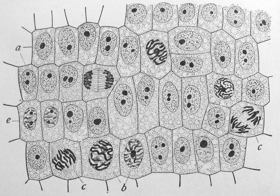Many types of prokaryotic and eukaryotic cells have a cell wall. The cell wall acts to protect the cell mechanically and chemically from its environment, and is an additional layer of protection to the cell membrane. Different types of cell have cell walls made up of different materials: plant cell walls are primarily made up of cellulose, fungi cell walls are made up of chitin, and bacteria cell walls are made up of peptidoglycan.